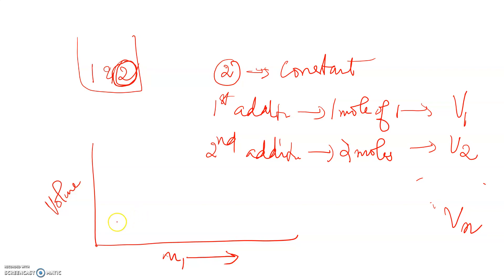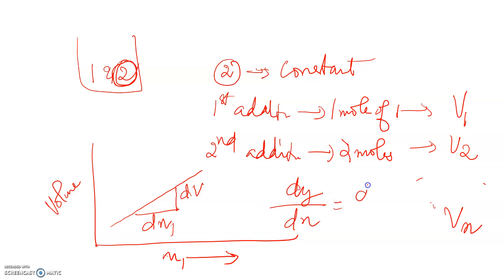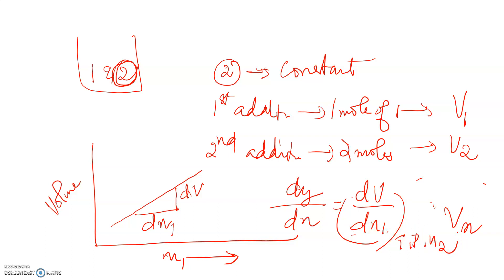Suppose we get a straight line. Whatever graph we get, if we take the slope at a particular composition, then that gives us dV over dN1. The slope is dy/dx — here dy is dV and dx is dN1. Hence the slope gives ∂V/∂N1 at constant temperature, pressure and number of moles of component two, and that is the partial molar volume — the partial molar volume of component one.